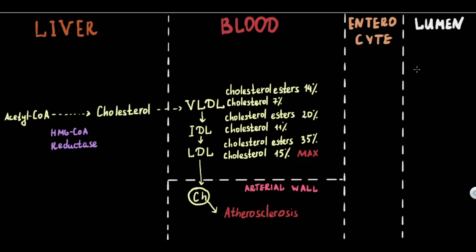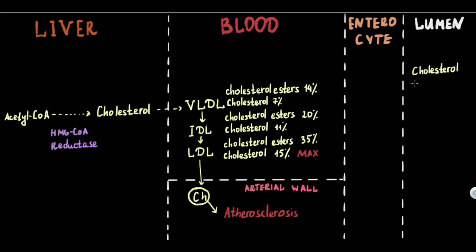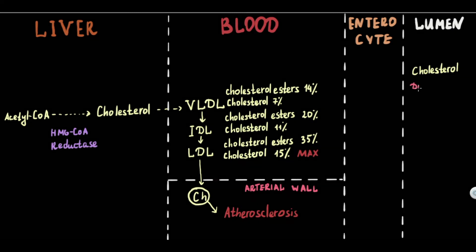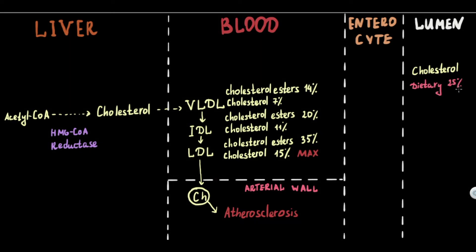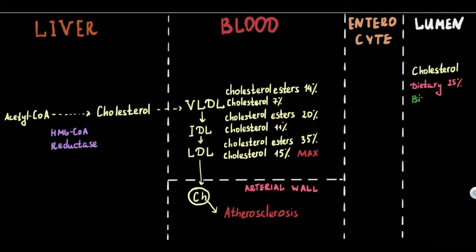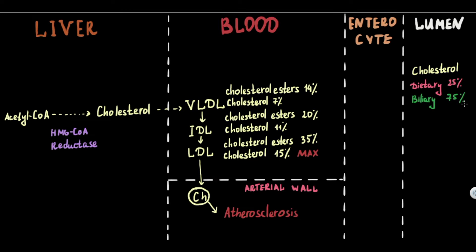The second source of plasma cholesterol is absorption of dietary and biliary cholesterol, which occurs primarily in the duodenum and proximal jejunum. Dietary intake provides about a quarter of the cholesterol entering the intestinal lumen, while the remaining three-quarters are derived from biliary cholesterol excretion from the liver.